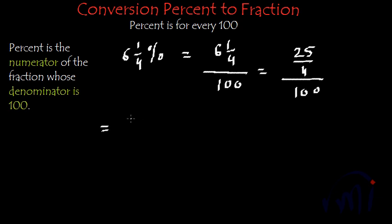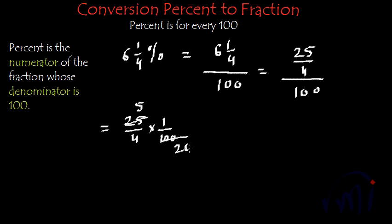And this can be written as 25 by 4 multiplied by 1 by 100. Now we simplify: 5 × 5 = 25, and 5 × 2 = 10, 5 × 1 = 5, 5 × 4 = 20 — cancelling common factors of 25 and 100 gives us 1 over 4, and 4 in the denominator. So this will be equal to 1 by 16.